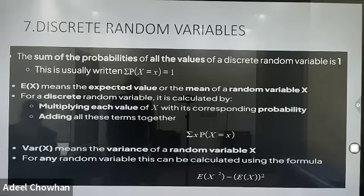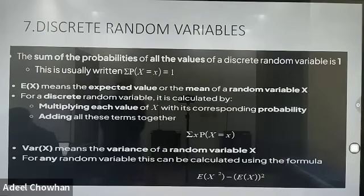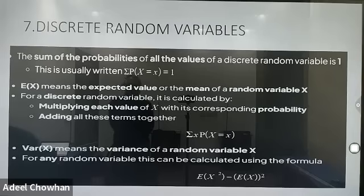The seventh topic is discrete random variables. The sum of the probabilities of all values of a discrete random variable is one, written as Σ P(X = x) = 1. The mean is denoted by E(X), the expected value, and the formula is E(X) = Σ x × P(X = x). The variance of discrete random variables is denoted by σ² = E(X²) − [E(X)]². The square root of the variance is the standard deviation. This is our whole syllabus for paper 9709, and we will discuss each topic one by one.